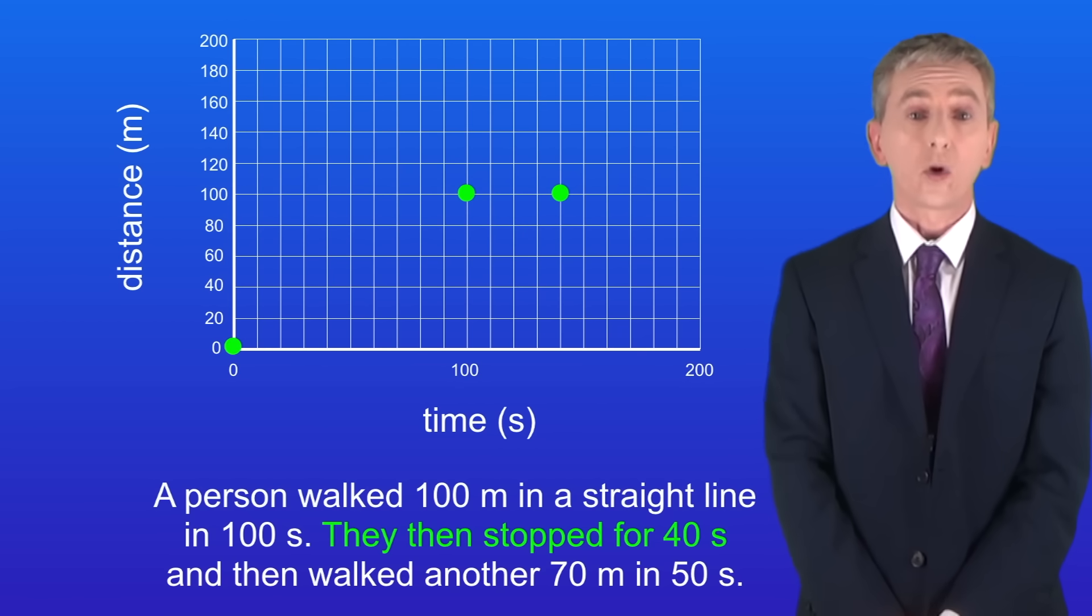The person now stopped for 40 seconds. So to show this we place a dot 40 seconds further along the time axis, but at the same distance as before, in other words 100 meters.